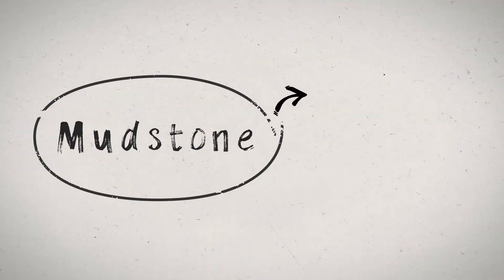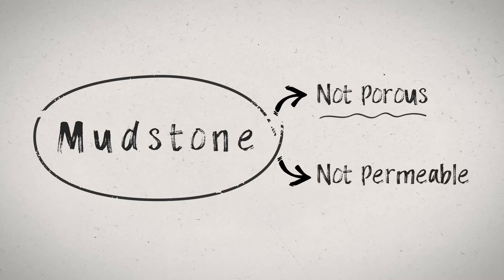Next, we've got a mudstone and again, rather creatively, it's made out of mud. To get from a mud to this mudstone, it has to be buried under several layers of rock and the water within it will slowly get squeezed out and the tiny particles of mud will get squished together. Because of this, the mudstone doesn't have a lot of pore space within it, so it's known as not porous. And as these pores are not connected, it's also not permeable and fluids won't be able to pass through it.